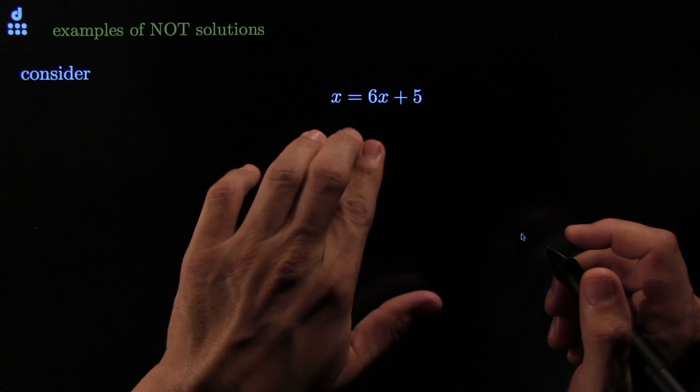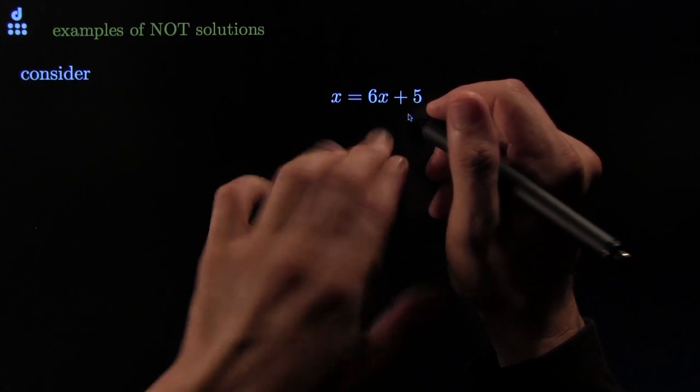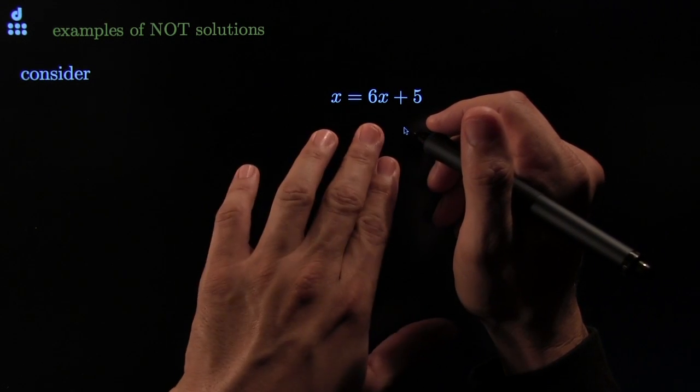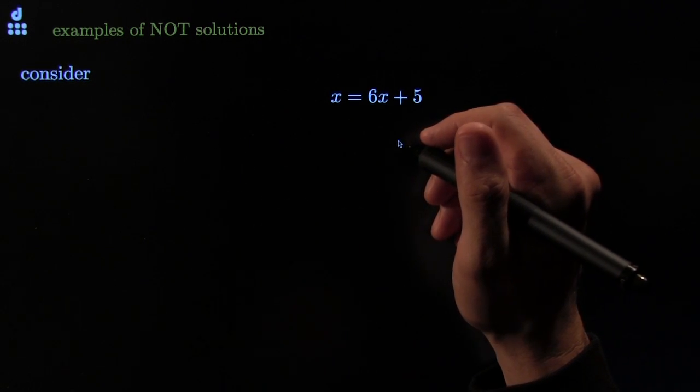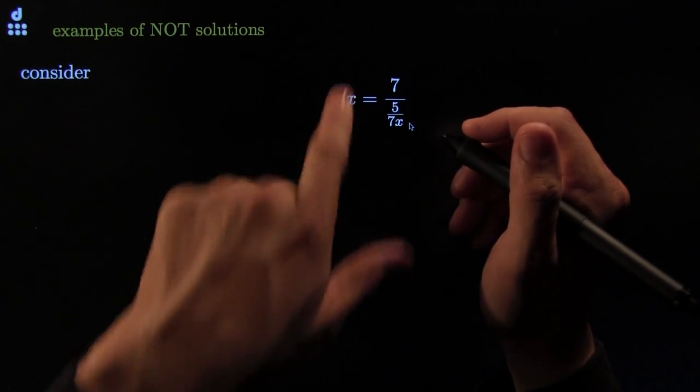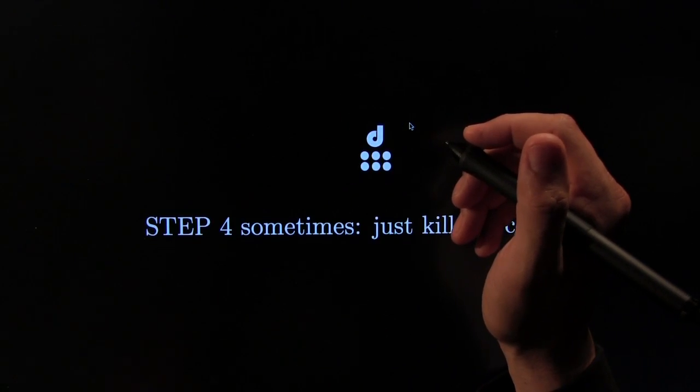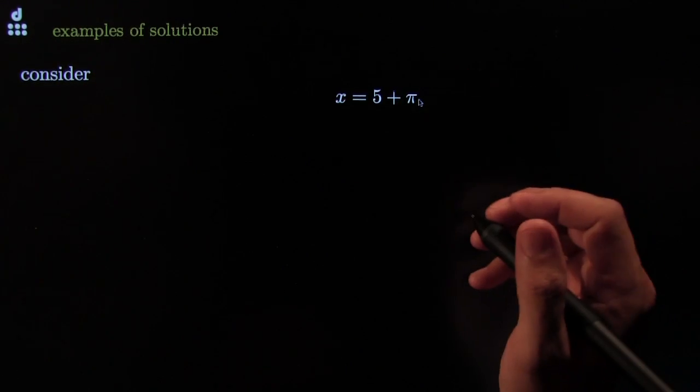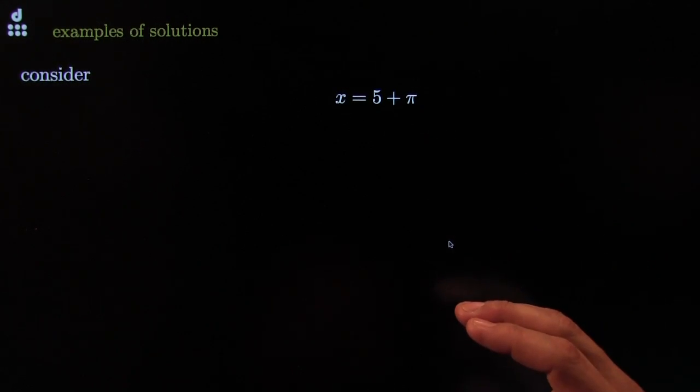This is what makes it not a solution. X equals blah and you still have x's over here. So you really have not isolated x. Therefore we would not call this a solution to the equation. This is not what we call a solution because you got x's on both sides. In order to be a solution you got to have x on one side like this and no x's on the other side. That's what a solution is. That's how you know when you're done solving the equation.